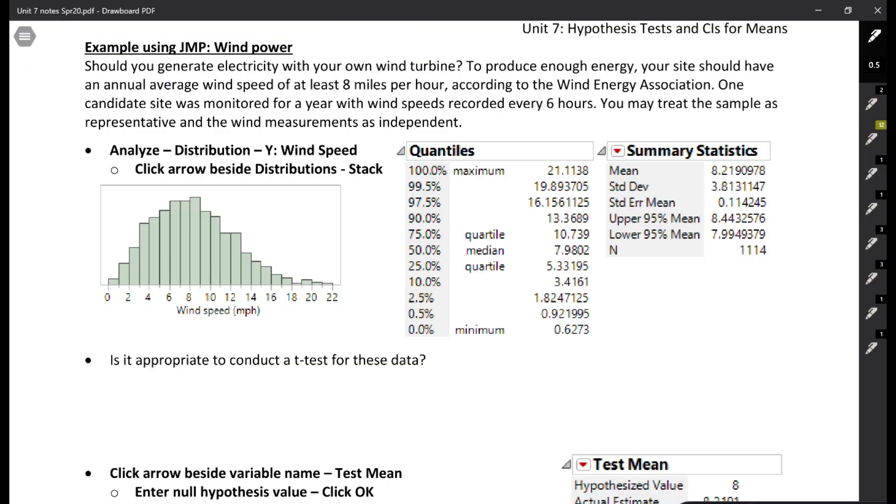So that's the first output that's in our notes. You're familiar with all of this output. It gives us the five-number summary, mean, standard deviation, some other information there. Before we actually start the test, we want to check our conditions. It tells us that we have data we can consider as representative, so we have a representative sample. We'll go ahead and check that one.